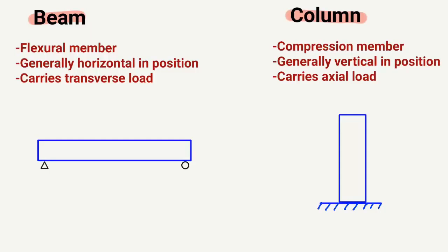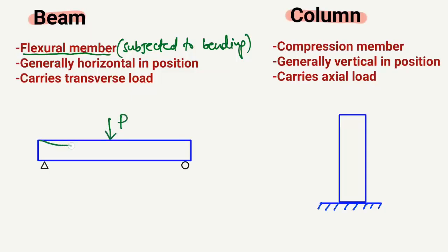A beam is basically a flexural member. By flexural member, it means there is a member that is subjected to bending. If we consider a beam supported here by a hinge and a roller support, when the load P is acting on this beam, the beam will try to bend. This shows the bending, and we have bending stresses along the cross-section of the beam. A member subjected to bending upon loading is called a flexural member, and flexural members are always beam members.